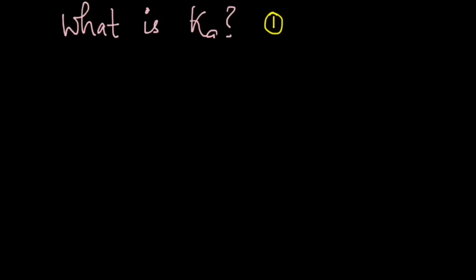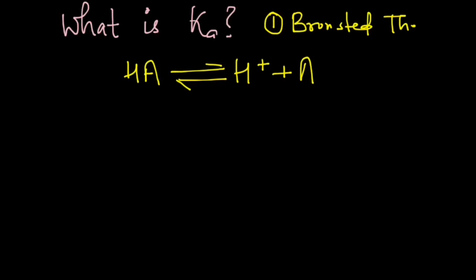One is from the Bronsted theory, which states that an acid is a substance that gives you H plus ions. So you get something like this. And the reason that I have drawn double arrows is because this acid may or may not be strong.